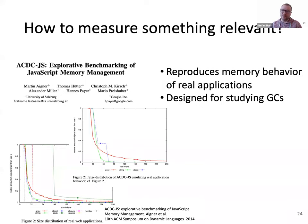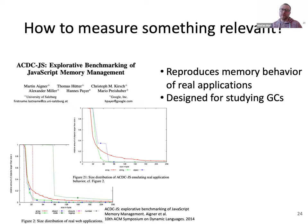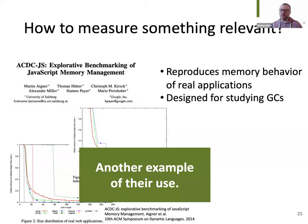Another example is ACDCJS, which is more high-level. In our context we may care about garbage collection performance, which is what people from Salzburg and Google looked at. They examined real applications — the 10 most widely used websites at that point — and captured object sizes, lifetimes, and other memory management behavior. Then they created ACDCJS to emulate all that, getting pretty close to the observed behavior with a nice synthetic system they could tweak and adapt and use for optimizing things.